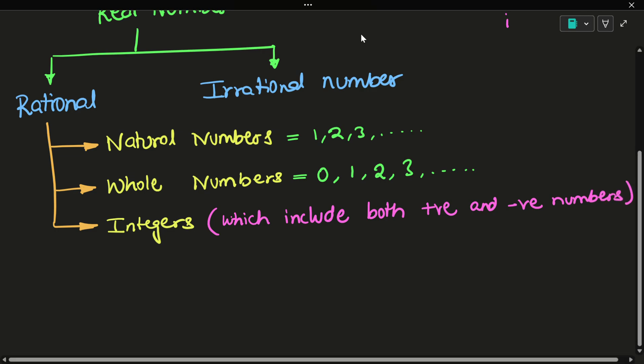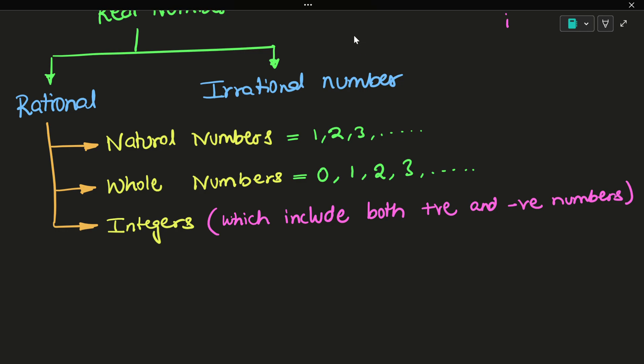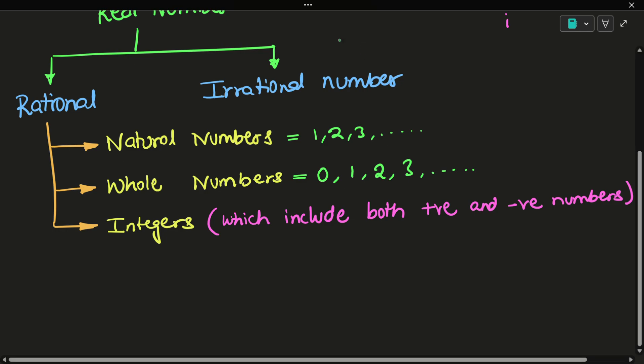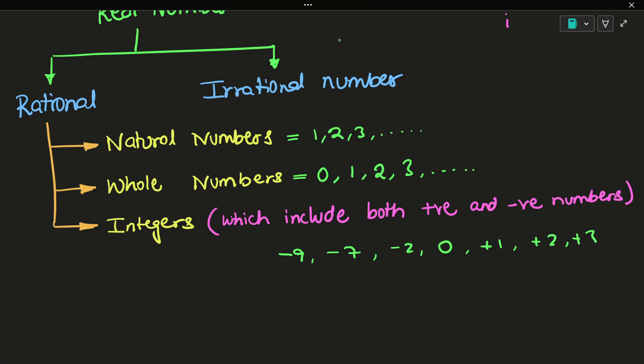Integers are the numbers which include both positive and negative. All the natural numbers are whole numbers, and all the whole numbers are integers.